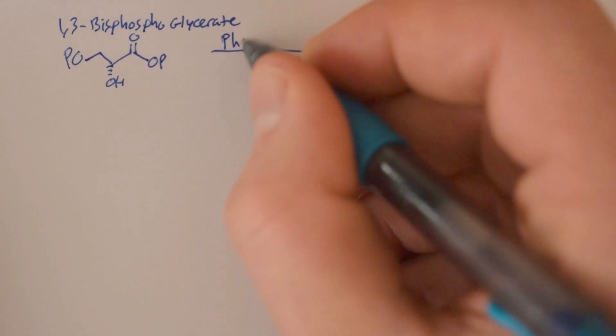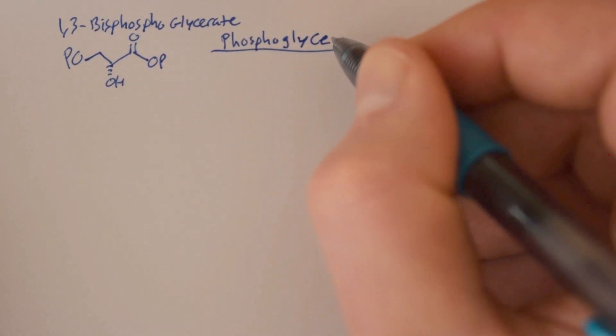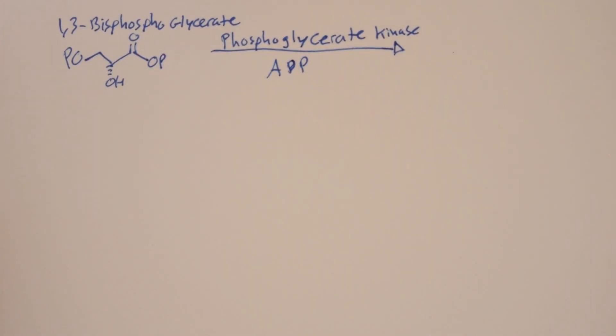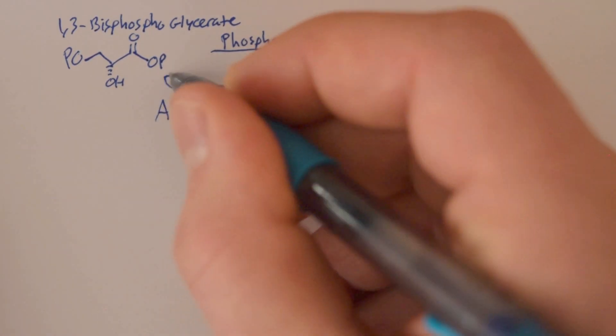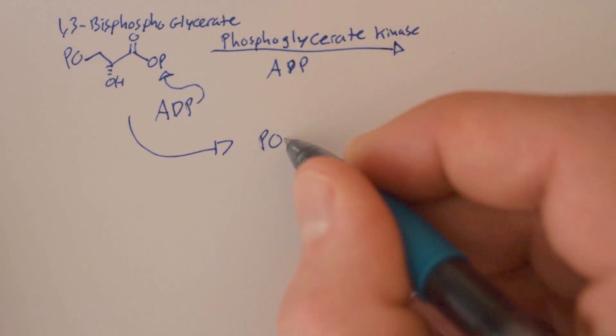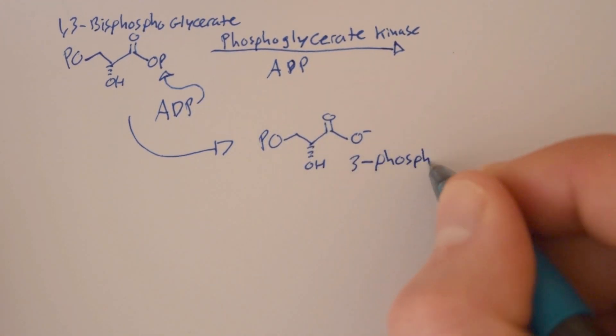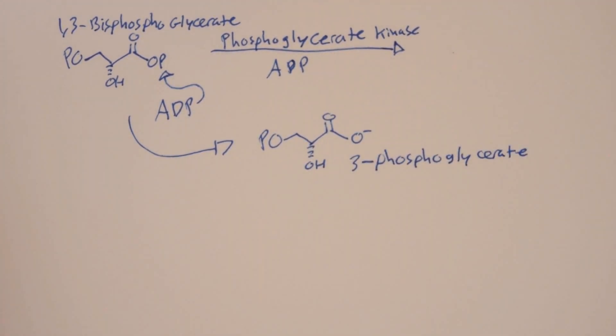The enzyme phosphoglycerate kinase and an ADP molecule take off a phosphate group, which gives us 3-phosphoglycerate and ATP.